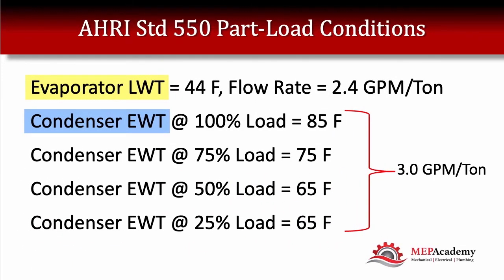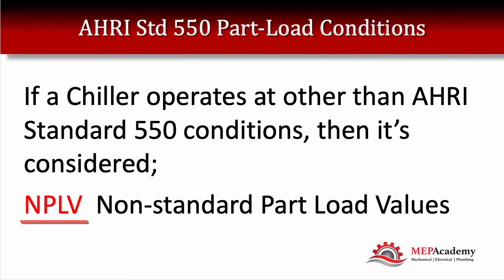What is AHRI Standard 550? These are the conditions under which the standard is developed. At 100% load, the condenser entering water temperature is 85°F, and as the load drops off, the condenser water temperature also drops off. Flow rate is 3 GPM per ton. The evaporator leaving water temperature is 44°F at a flow rate of 2.4 GPM per ton. If a chiller runs at conditions other than AHRI Standard 550, it's considered Non-Standard Part Load Values — NPLV.